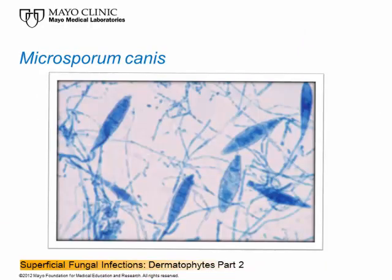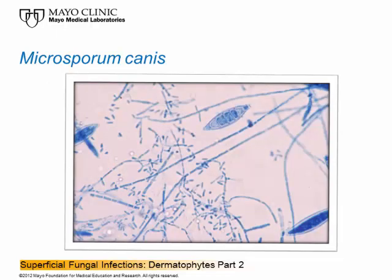This is an example of Microsporum canis. All these are macroconidia, but look in the background — you see some small things there. Those are microconidia of Microsporum canis. These have multiseptate macroconidia. It's a little difficult to recognize the rough-wall projections on this particular slide. At the tip of the macroconidium on the upper right-hand side it's a bit curved and just a little bit rough. You have to scour the whole culture to be able to identify these organisms because they don't always sporulate as expected.